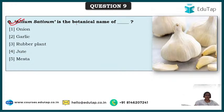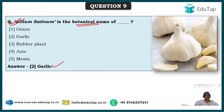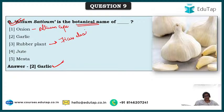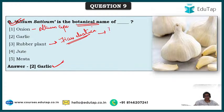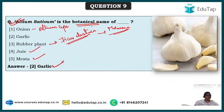Allium sativum is the botanical name of garlic, and onion is Allium cepa. Rubber plant is Ficus elastica, belonging to family Moraceae — to which the fig plant and mulberry plant also belong. This is a Ficus species.